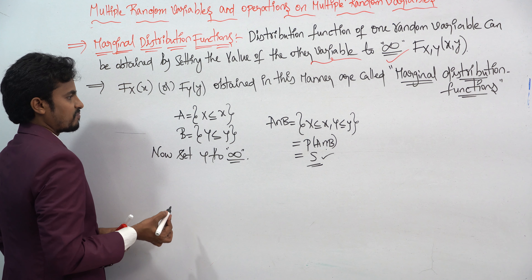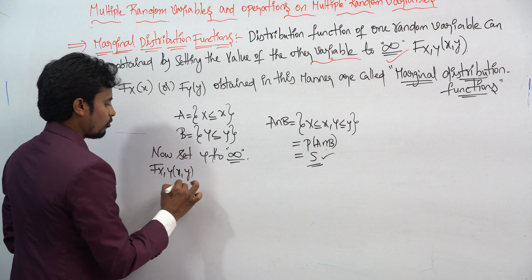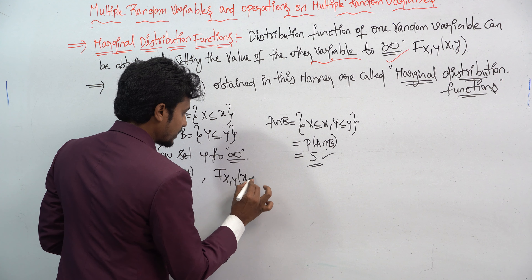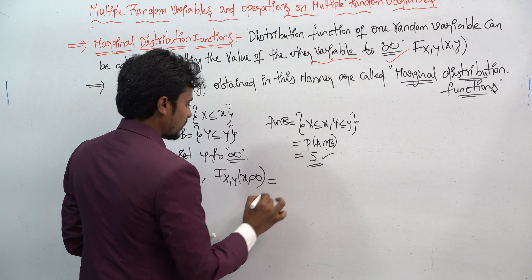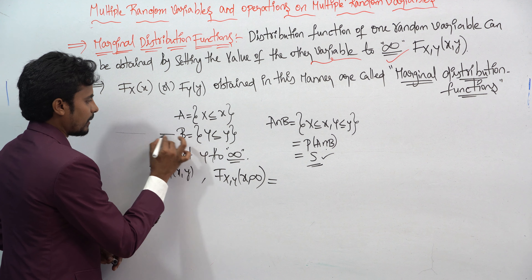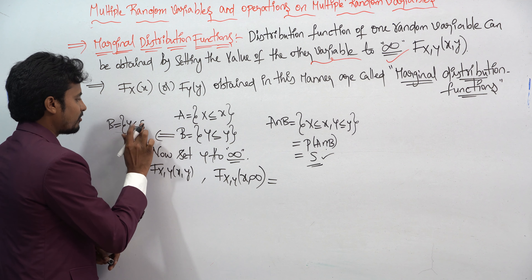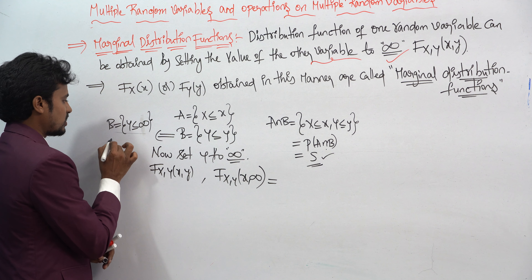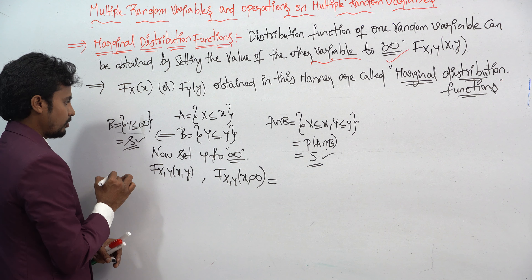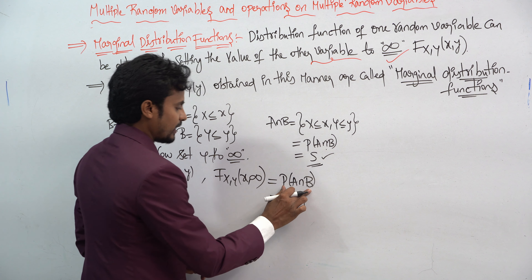Now set y to infinity. The marginal distribution can be represented as F(x,y) where x and y are small. If you put y equal to infinity, you get F(x, ∞). If event B is defined as Y less than or equal to y, then when B becomes Y less than or equal to infinity, B becomes the entire sample space Ω.